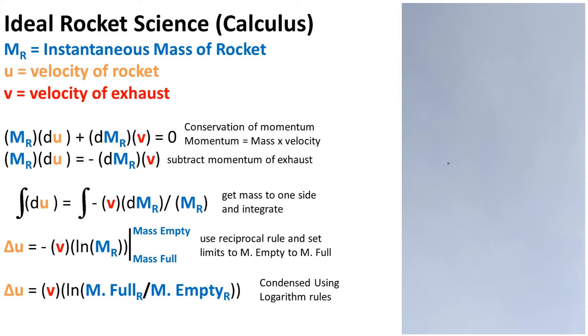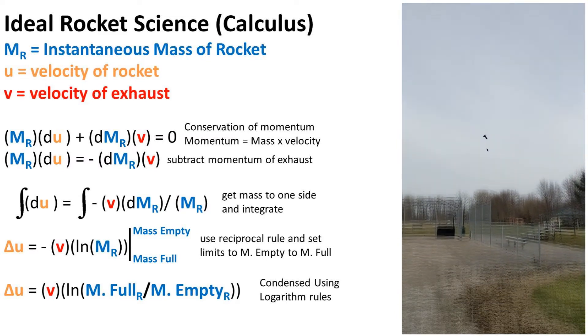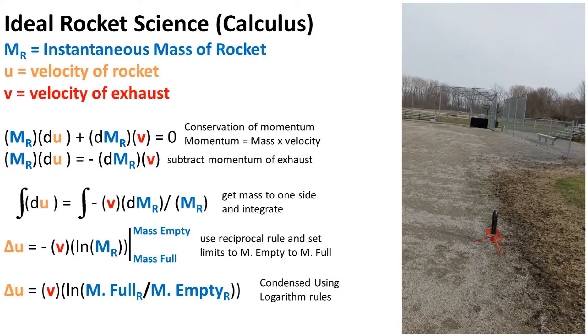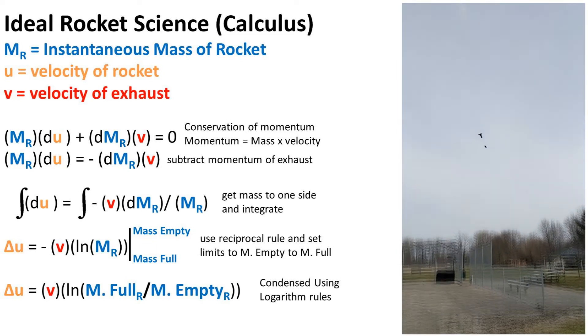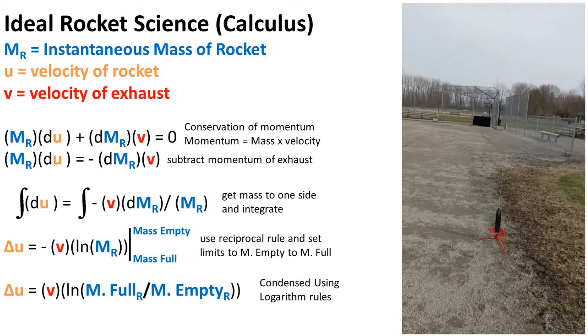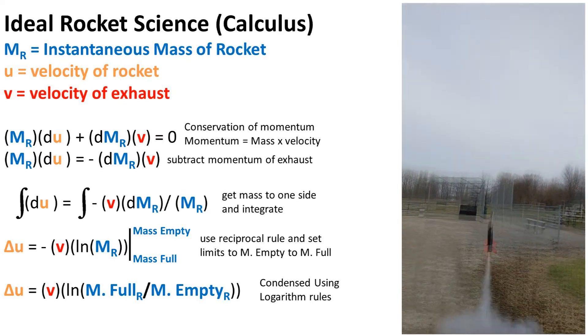Next we can use the rules of logarithms to further condense this formula to be the velocity of the rocket being equal to the velocity of the exhaust times the natural logarithm of the mass of the rocket full divided by the mass of the rocket empty.